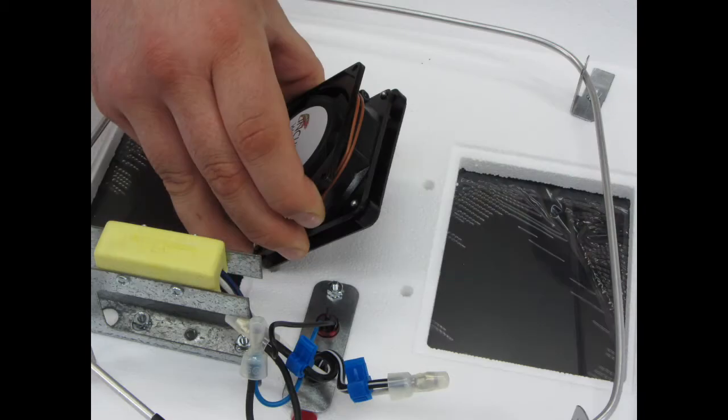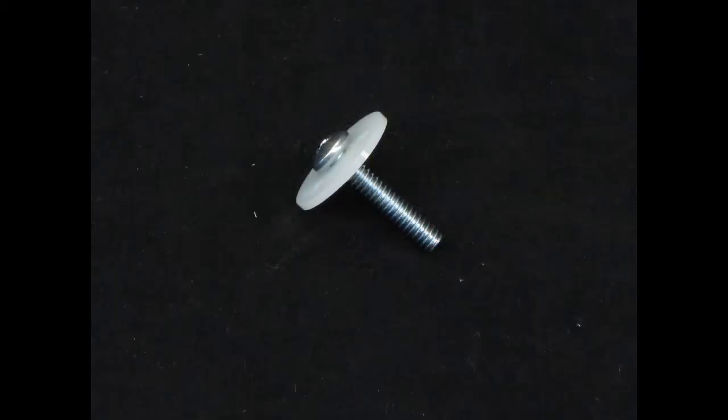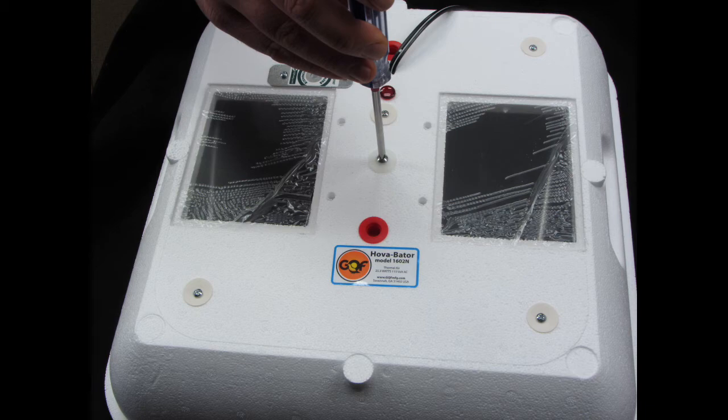Now, lay your fan down, making sure to line the holes up the best you can. While holding the fan with one hand, turn your lid over and place the mounting screw with washer in the center hole. Start it by hand to ensure it doesn't cross-thread and then gently snug it in place with your screwdriver.